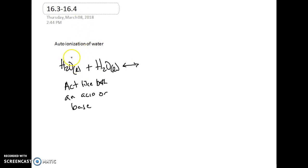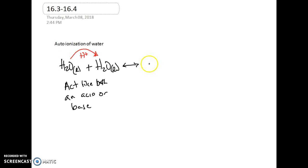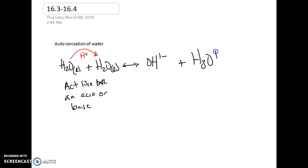If we have a couple of water molecules and one donates a hydrogen ion to the other, that's going to be our Bronsted-Lowry acid, and the one accepting the proton is going to be the Bronsted-Lowry base. When water does donate a hydrogen ion, it's going to be left as a hydroxide ion (1− charge), and it's also going to form a hydronium ion.